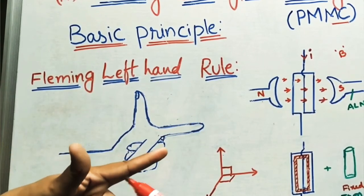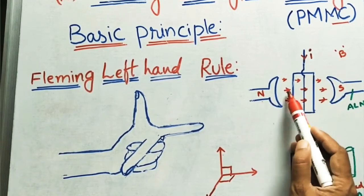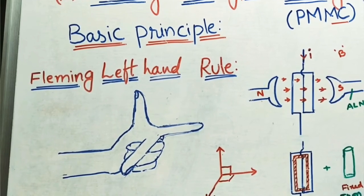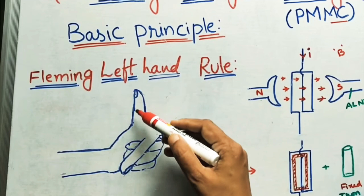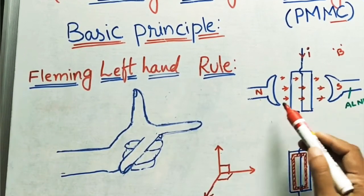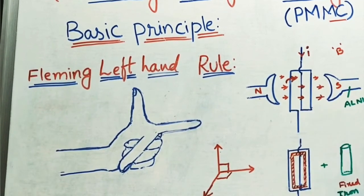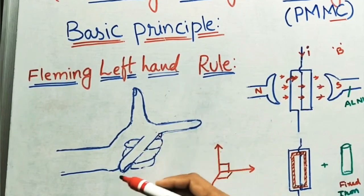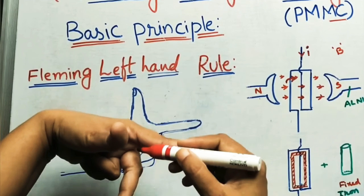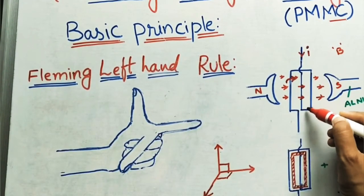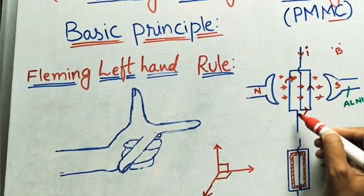The index finger shows the flux direction — the flux density of the magnet. The thumb shows the direction of motion, meaning the coil is moving upward, rotating clockwise. The middle finger shows the current direction — the current is coming from the downward direction, flowing in this direction through the wire.